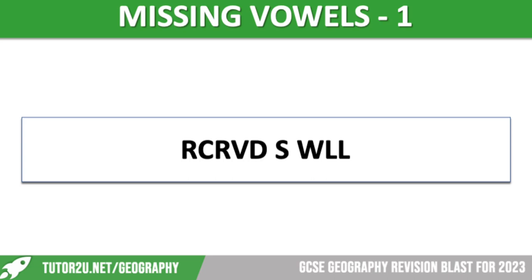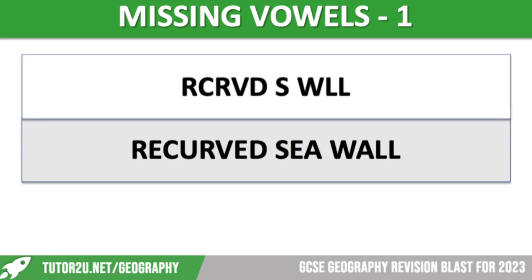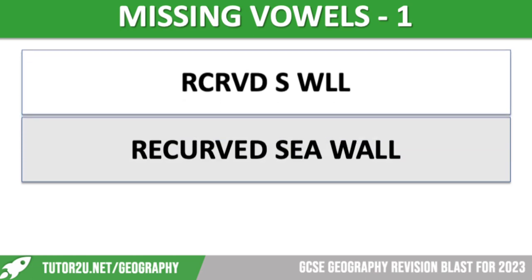We're now going to move on to a game of missing vowels. These are all different types of coastal management. Our first one is a term you're probably familiar with. It is a recurved sea wall. It's designed to stop flooding and act as a barrier to waves. The recurved nature of the sea wall means that the waves are reflected back onto the beach. They are strongly made of concrete.